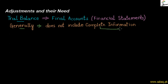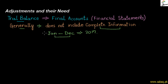The trial balance contains all the transactions of the business. If we make financial statements for the year starting January and ending December 2017, we make the final accounts from the trial balance. However, some information becomes known only at the last date — for example, information known on the 28th of December, after the trial balance has already been made.